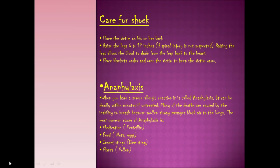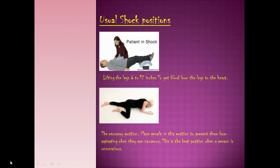These are the shock positions you put a patient in. The picture above shows how to lift the legs six to twelve inches to get blood from the legs to the heart. The recovery position, shown below, is used to prevent aspiration when a person is nauseous or vomiting, and it's the best position when someone is unconscious.